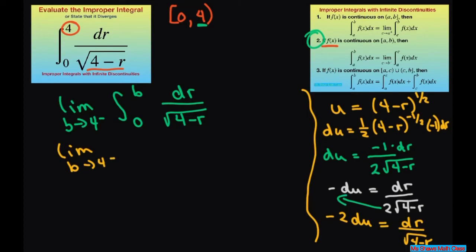And we're going to evaluate it. Now let's rewrite this. We have negative 2, and then negative 2 du equals this, which is our u. So this part here is our u, and you're going to write our u as square root of 4 minus r.